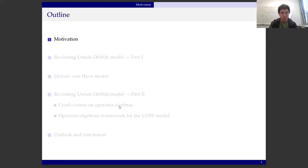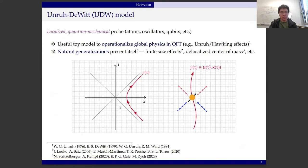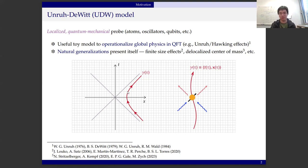So let me go through the motivation first. I hope the audience is familiar with the so-called Unruh-DeWitt particle detector model, which is, very roughly speaking, a localized quantum mechanical probe such as an atom, oscillators, or qubits, although the original model was a two-level system. This is typically understood as a useful toy model to operationalize global physics in quantum field theory — for example, to understand Unruh and Hawking effects without using global number operators. The model is based on a light-matter interaction and presents itself with many natural generalizations: finite size effects, delocalizing the center of mass, and countless others.